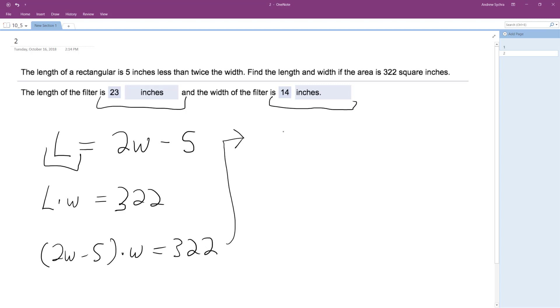So going up here, I'll have 2W squared minus 5W, and then move 322 over to the left is equal to zero.